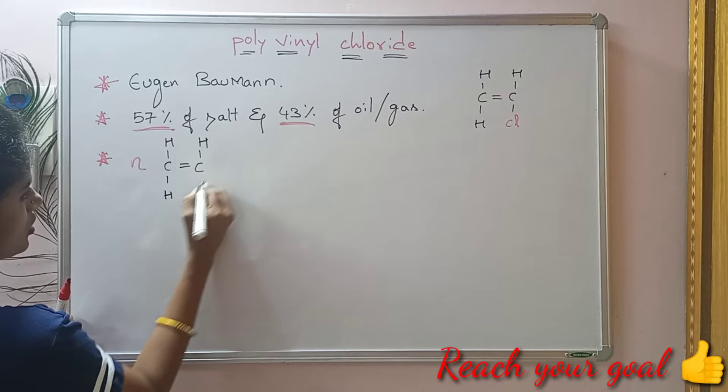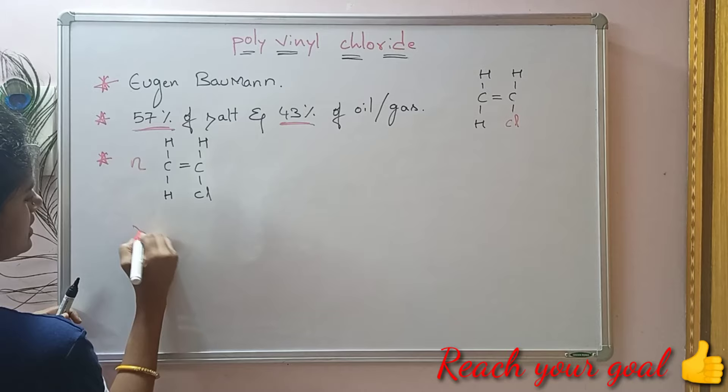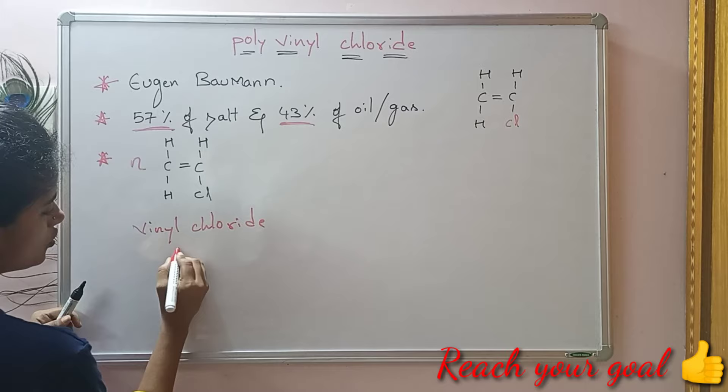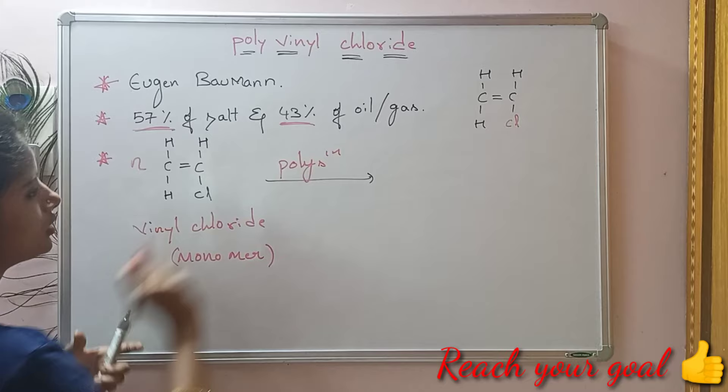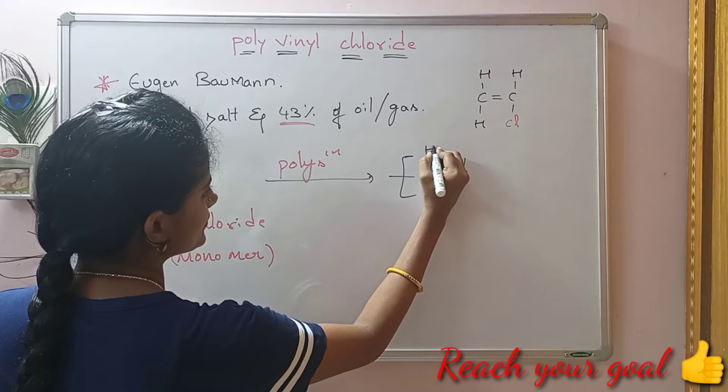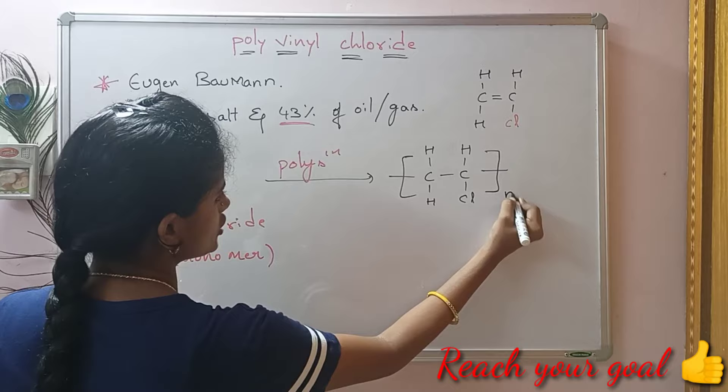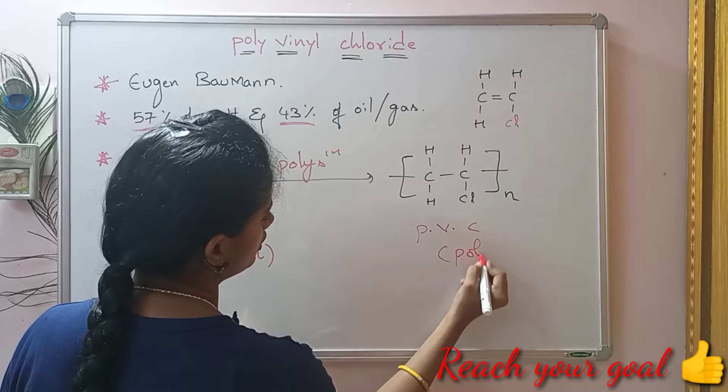This is the structure of vinyl chloride. This is the monomer. When polymerization is performed, we get polyvinyl chloride. This is the structure of polyvinyl chloride. Polyvinyl chloride — this is a polymer.